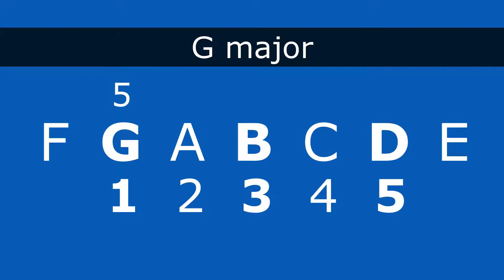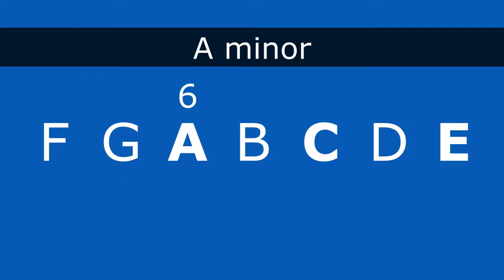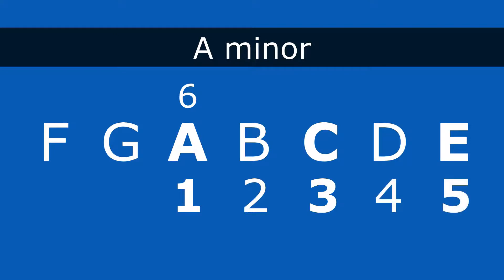Move to the next note of the scale, which is A. A is the 6th scale degree. And now we're going to build a chord, so A becomes the root of that chord, and we need a 1, 3, 5, only using the notes of the C major scale. So A is 1, C is 3, E is 5. Now I play those notes together — A, C, E — and you can hear it has that darker sound. That's that A minor chord.